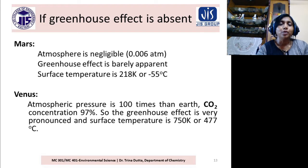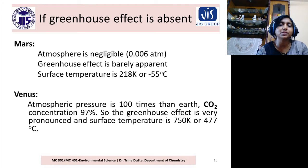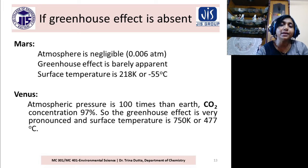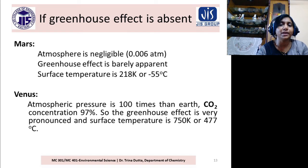Now let's take Venus. The opposite condition exists there. The atmospheric pressure is 100 times that of Earth. The CO2 concentration is 97%, so the greenhouse effect is very pronounced, and the surface temperature is 750 Kelvin — or 477 degrees Celsius — and life does not exist on Venus.